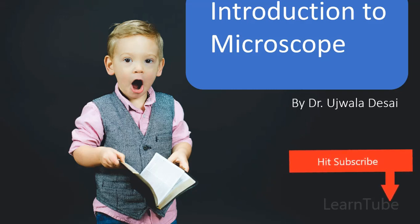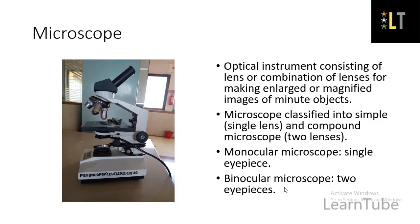Dear all, welcome to this video. Please hit the subscribe button so that you automatically get updates for upcoming videos and lectures. A microscope can be defined as an optical instrument consisting of a lens or combination of lenses for making enlarged or magnified images of minute objects. The basic reason behind using a microscope is enlargement of small objects.